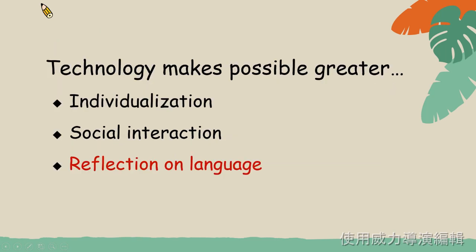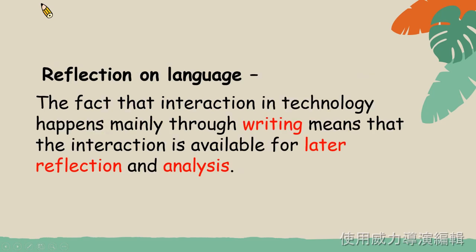Technology makes possible greater reflection on the language. The fact that interaction in technology happens mainly through writing means that interaction is available for later reflection and analysis. 我們剛說到在課堂中透過多媒體網路的使用,同學之間的互相交流能夠增進彼此社交能力。 目前課堂中運用的資訊科技大多都是以文字做體現,比如說社群媒體、信箱等等。 這種社交互動往往都能讓同學事後去回想、去反思其內容,並有所體會,也能嘗試做些分析。